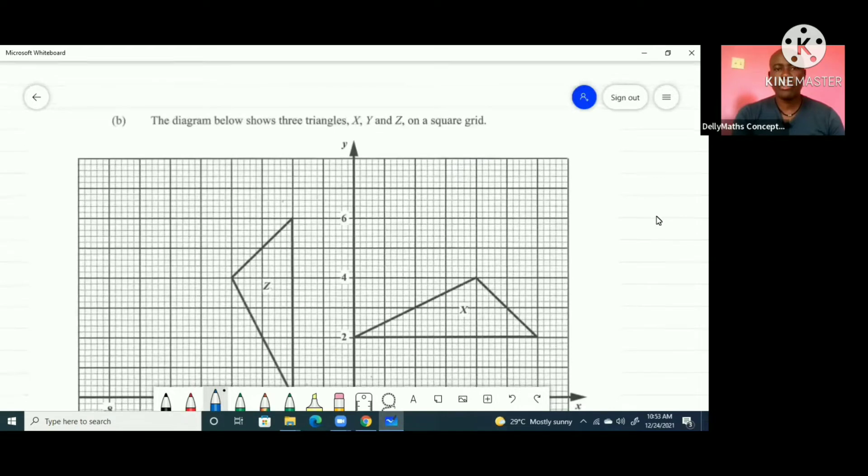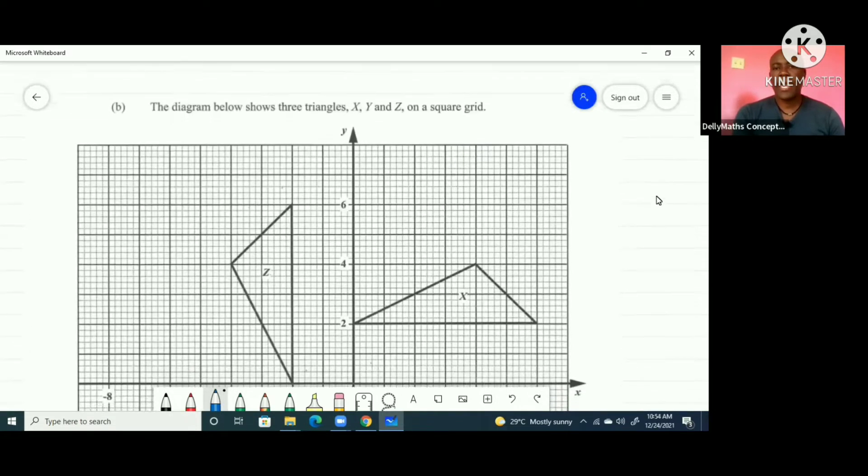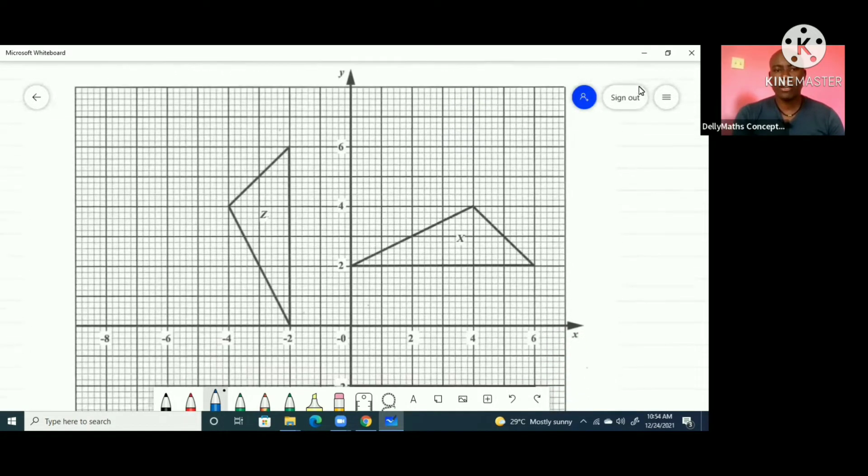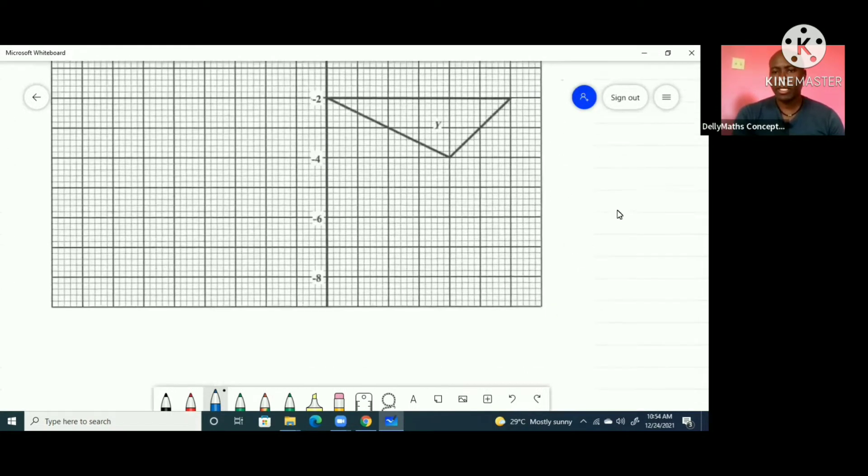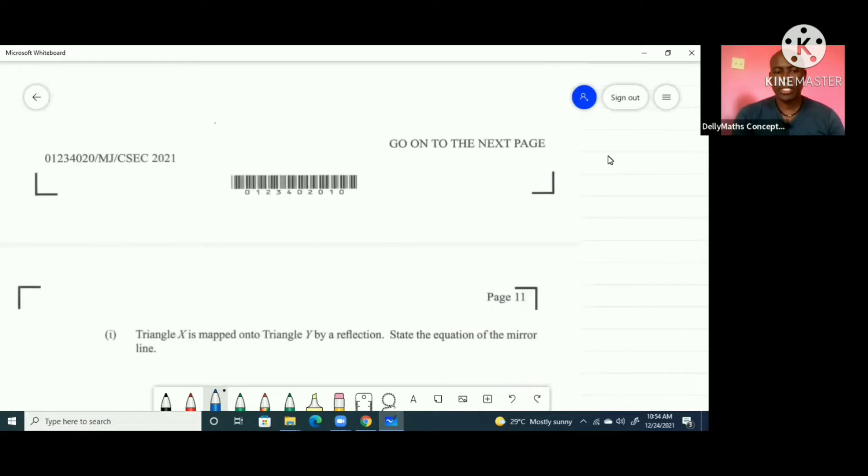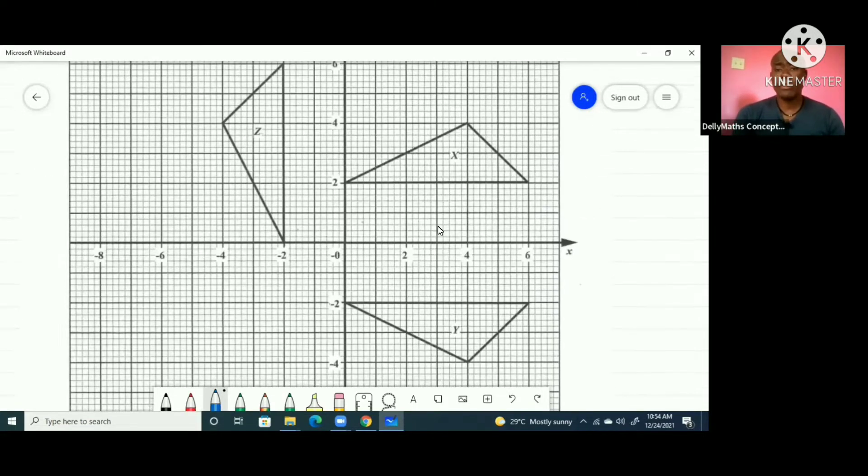The diagram below shows three triangles X, Y, and Z. The first question says triangle X is mapped onto triangle Y by a reflection. State the equation of the mirror line. We're observing X and Y through the equation of the mirror line. First, we have to understand how reflection works.